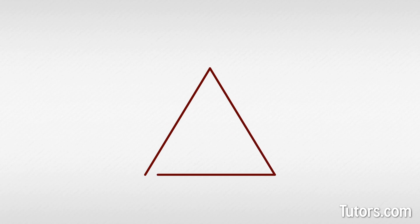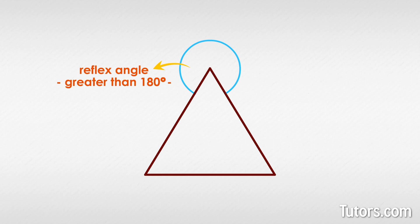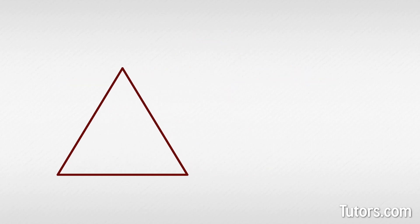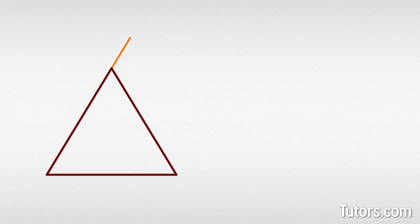Now let's move on to exterior angles. Every regular polygon has exterior angles. These are not the reflex angle greater than 180 degrees created by rotating from the exterior of one side to the next — that is a common misunderstanding. For instance, in an equilateral triangle the exterior angle is not 360 degrees minus 60 degrees equals 300 degrees, as if rotating all the way around the vertex.